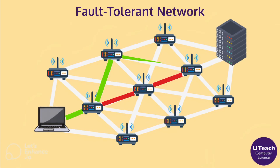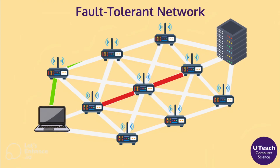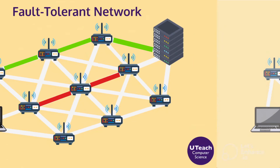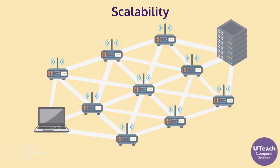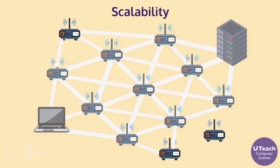The redundancy of routing options between two points increases the reliability of the Internet and helps it scale to more devices and more people. Just as scalability is an important feature of algorithms, it was also one of the core design features of the Internet. The designers of the Internet built this system to be scalable, meaning the ability to add more devices easily without any negative consequences to time performance.